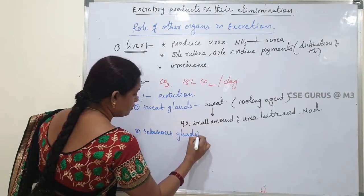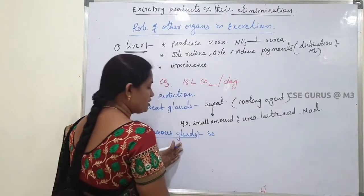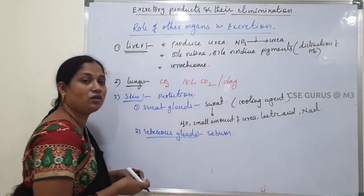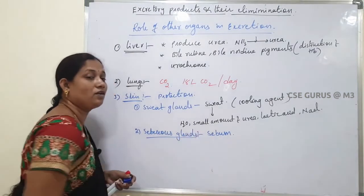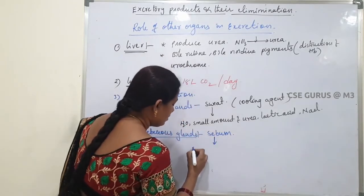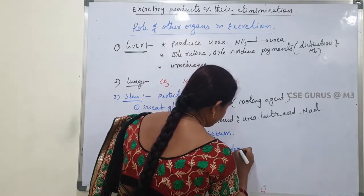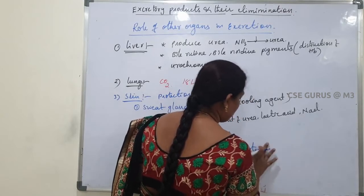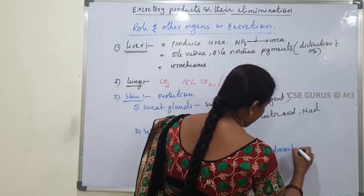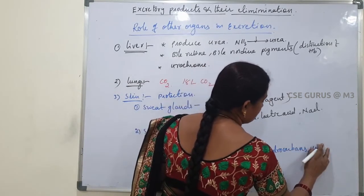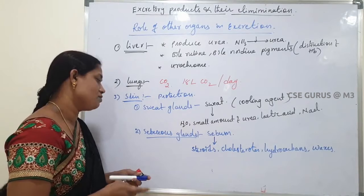Next are the sebaceous glands, also called oil glands. The secretion of sebaceous glands is called sebum — an oily substance secreted from the skin. Sebum contains sterols, steroids, cholesterol, lipids, hydrocarbons, and waxes. These substances are eliminated in the form of sebum, which is why sebaceous glands are also considered a type of excretory organ.